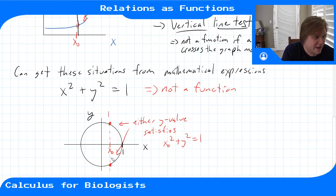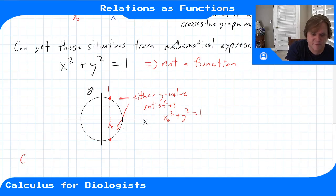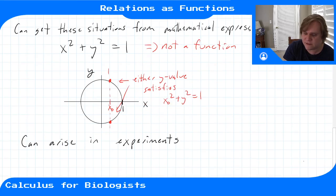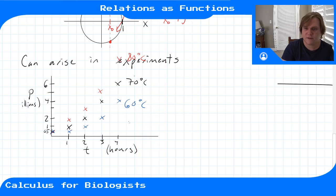Anything which fails the vertical line test is not a function. And this can arise from an experiment too. This can arise in experiments. So in the previous video, we ran that experiment with the population levels and we did that in three different temperatures. I'll erase this.